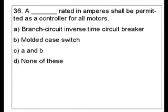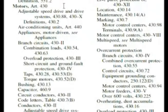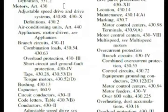The key word here would be motors. You could look for something in regards to rating in amperes or as a controller. Motor controls is a big category in and of itself. Let's look under motors first. Here we are in motors in article 430 in the index. We need to find something rated in amperes that we can use as a controller for motors, and you might think circuit breakers.